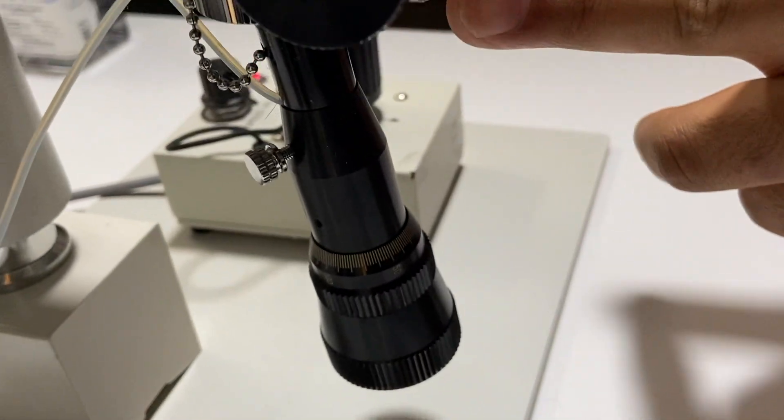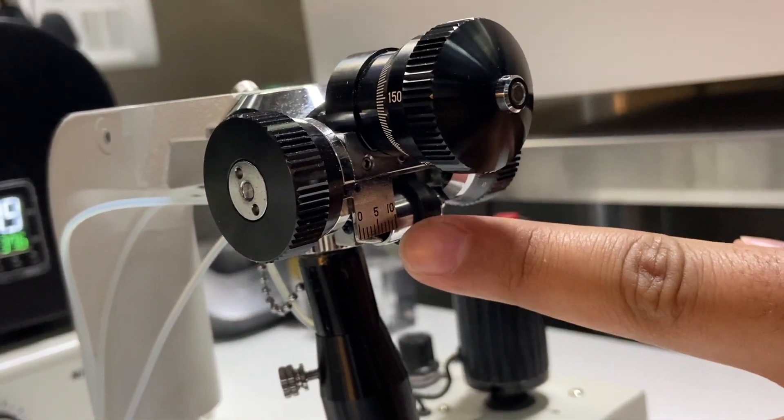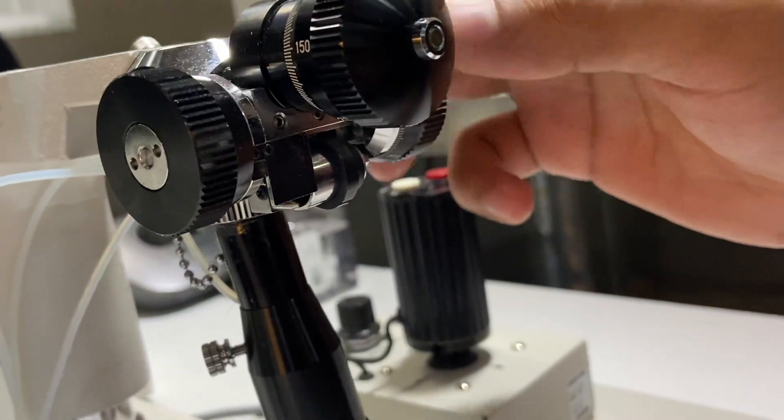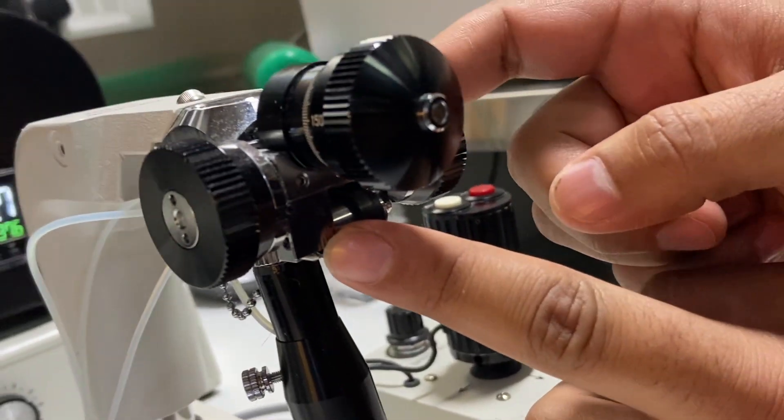Similarly, if you see from the bottom, you have zero, you have five, you have ten. So this also needs to be always on the five direction. So I will move it and this now is almost on the five.